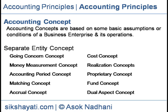Matching Concept: Under this concept, accounting record is made in such a manner that cost may be compared with revenue. This concept enables comparison of revenue and cost. Example: Rupees 10,000 is earned and for that Rupees 3,000 is paid and Rupees 2,000 remains to be paid. Under this concept, the net profit would be Rupees 10,000 minus 3,000 plus 2,000 is equal to 5,000.